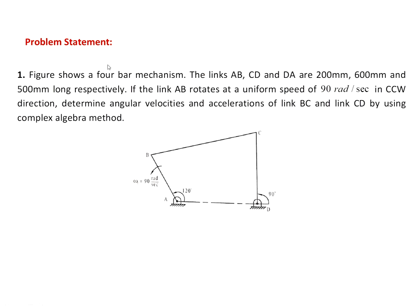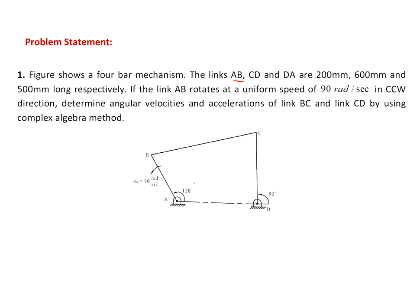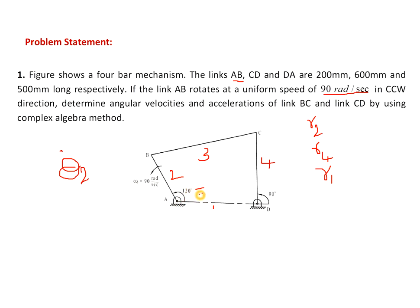Looking at the problem statement, the figure shows a 4-bar mechanism. We have defined link AB as link 2, link 3, and link 4. The length of link AB, R2, is defined as 200 mm. They have defined the length of links R4 and R1 as well. AB rotates at a uniform speed of 90 radians per second, which defines theta2 dot, i.e., omega2. From the diagram, theta2 is 120 degrees and theta4 is 90 degrees — these are the data given.